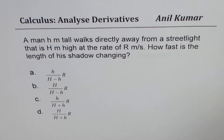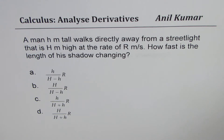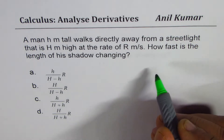I am Anil Kumar. This video is for my student Melissa, who wants to understand how we solve rate of change problems when shadows are involved. I defined a question which is kind of general purpose — I think you can solve any rate of change question regarding shadows with the help of this example. The question is: a man of height h meters tall walks directly away from a street light that is capital H meters high at the rate of r meters per second. How fast is the length of the shadow changing?